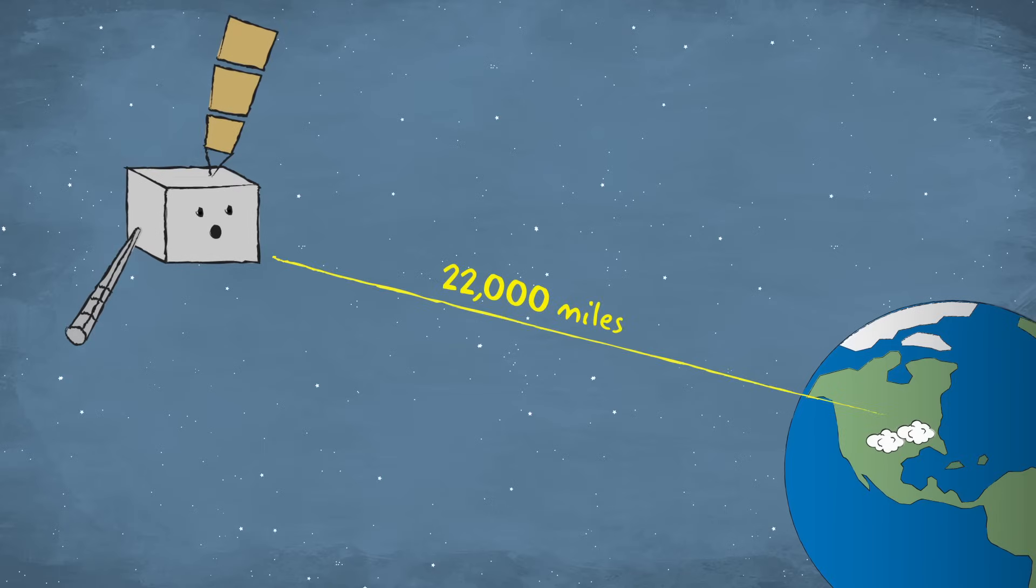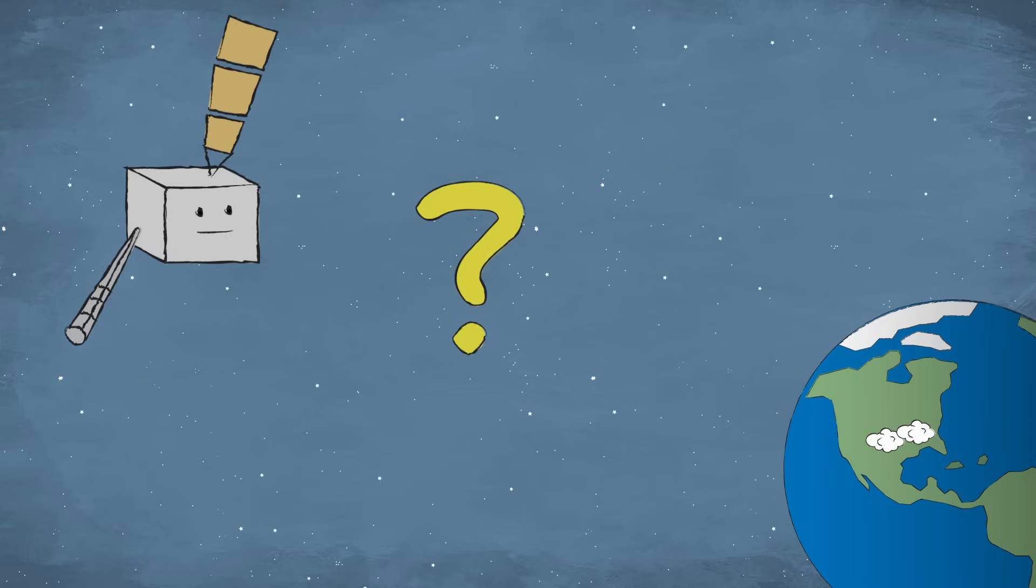But I'm 22,000 miles above Earth. How does your local weather forecaster know what I see all the way up here?